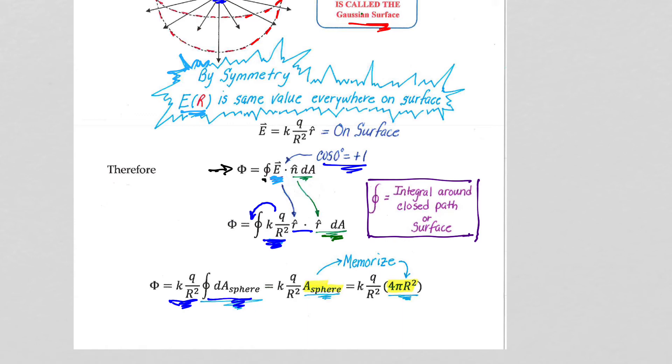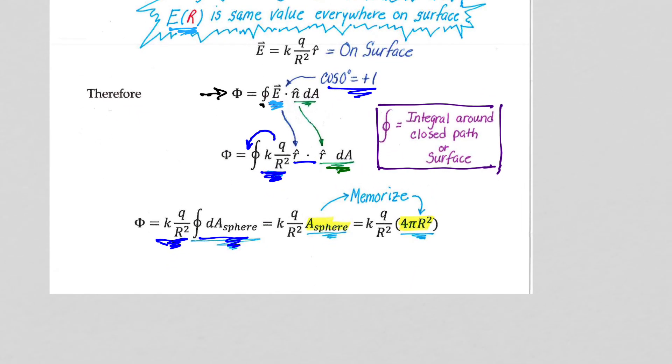The integral of dA is A, this is why I said we don't really need to do the double integral, because we're working with such nice geometries. The integral of dA is A, and we're just going to memorize that the surface area of a sphere is 4 pi r squared.